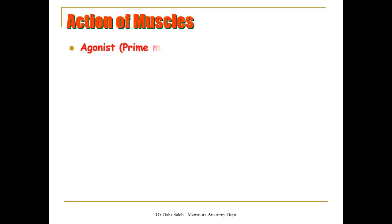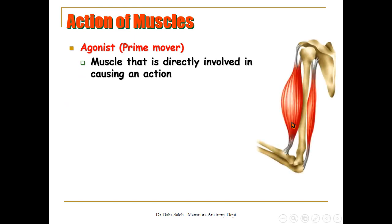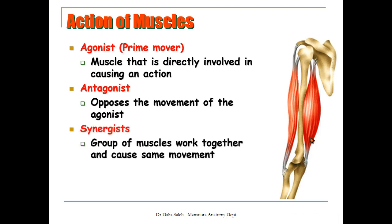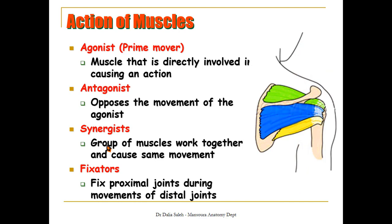For the action of muscles: agonists or prime movers are directly involved in causing an action — for example, flexing the elbow involves the brachialis and biceps brachii as prime movers. Antagonists oppose the movement of the agonist — in elbow flexion, the triceps is the antagonist. Synergists work together to cause the same movement. Fixators fix the proximal joint during movement of the distal joint — for example, small muscles around the shoulder fix the upper end of the humerus while you move your distal joint.